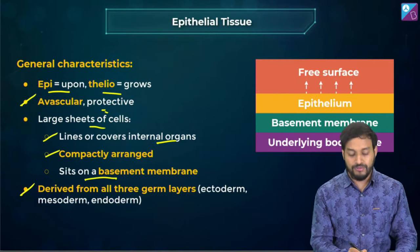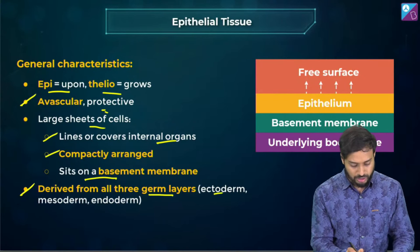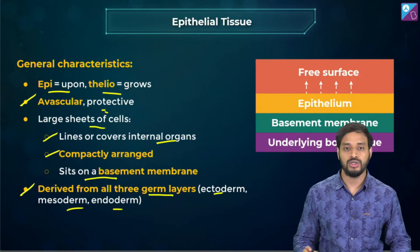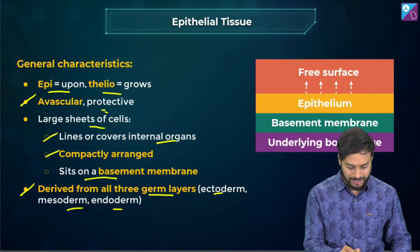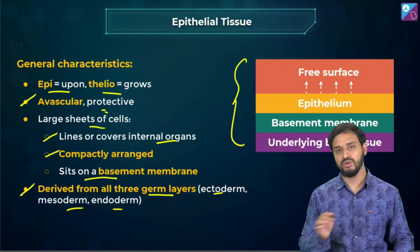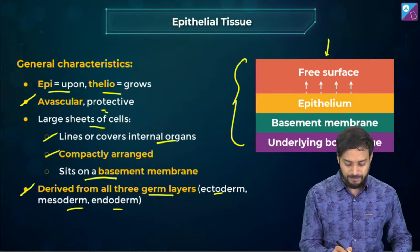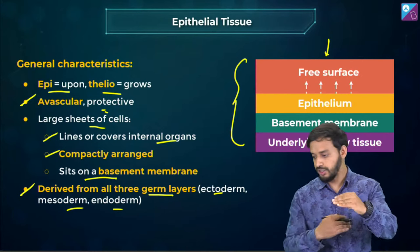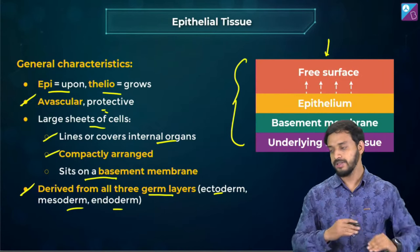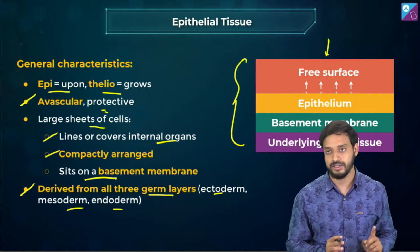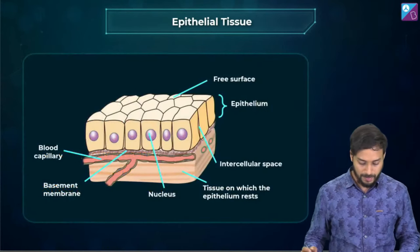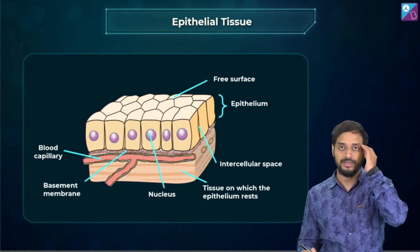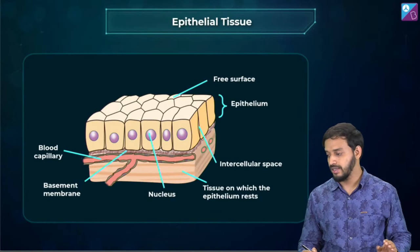Epithelial tissues are derived from all three germ layers — ectoderm, mesoderm, and endoderm. Here is a representative image — the free surface is epithelium, followed by the basement membrane, and then the underlying body tissues beneath. Please note this image.